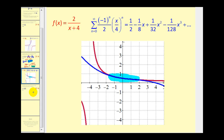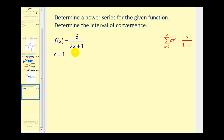Let's take a look at one more example for this video. The first thing we should notice about this example is that it's centered at x equals one, so we have to replace x with x minus one. After replacing x with x minus one and distributing the two, we've subtracted two from the denominator, so to undo that we add two back as well.